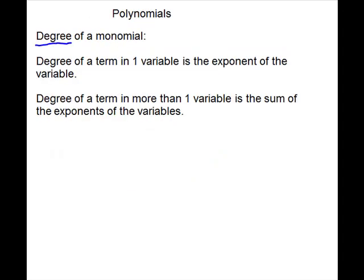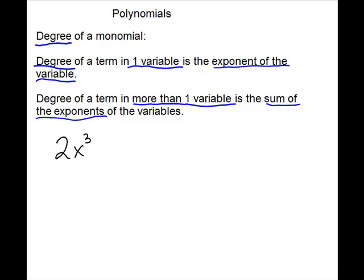Another definition we need to look at is degree. The degree of a monomial — degree of a term — in one variable is the exponent of the variable. And another definition: the degree of a term in more than one variable is the sum of the exponents of the variables. For example, if we have the term 2x to the 3rd, that is one term in one variable, so the degree is just the exponent — 3. If we have the term 5x to the 3rd y to the 5th, this has more than one variable, so the degree will be the sum of the exponents: 3 plus 5, which is 8.